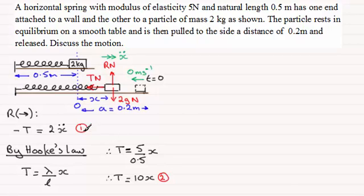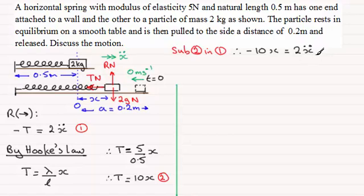So these two equations tend to be very common in problems like this. Now, what we do next is we would generally substitute equation 2 into equation 1. We therefore have minus T, so it's going to be minus 10x, is equal to 2x double dot.